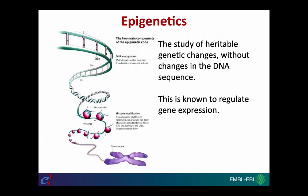One of the types of data that Ensembl incorporates into the annotation of regulatory features is the underlying epigenetic state of the DNA in any particular region of the genome. Epigenetics can be thought of as the study of heritable genetic changes that are independent of the sequence of the DNA itself, and these changes are also known to regulate gene expression.